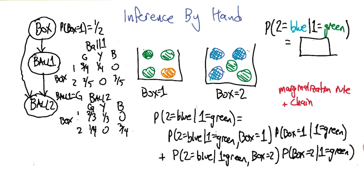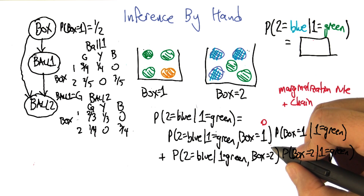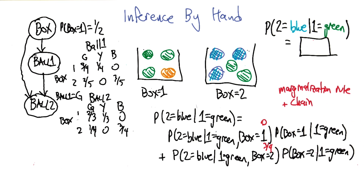Well, we certainly know the very first terms. The first part's probability second ball is blue, given that the first one is green and we're in box one. And the probability that the second ball is blue, given that the first one is green and we're in box two. That's easy — that's actually in the table. It's zero in this case and three quarters in the other case. So it's zero in the first case and three quarters in the second case, straight out of the table.